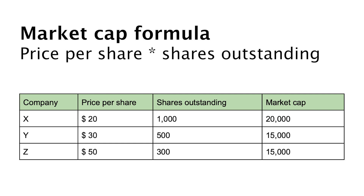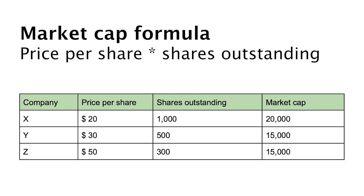If we check company I, the price per share is $30 — $10 higher than company X at $20 — but company I has only 500 shares outstanding, meaning a market cap of $15,000. Company Z has the highest price per share at $50, with 300 shares outstanding, so the market cap is also $15,000. Company X has the lowest share price but the highest market cap because of its shares outstanding.